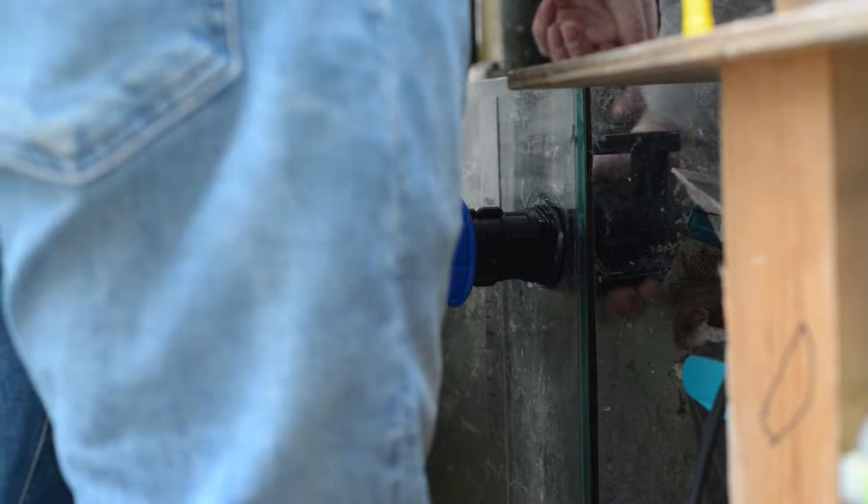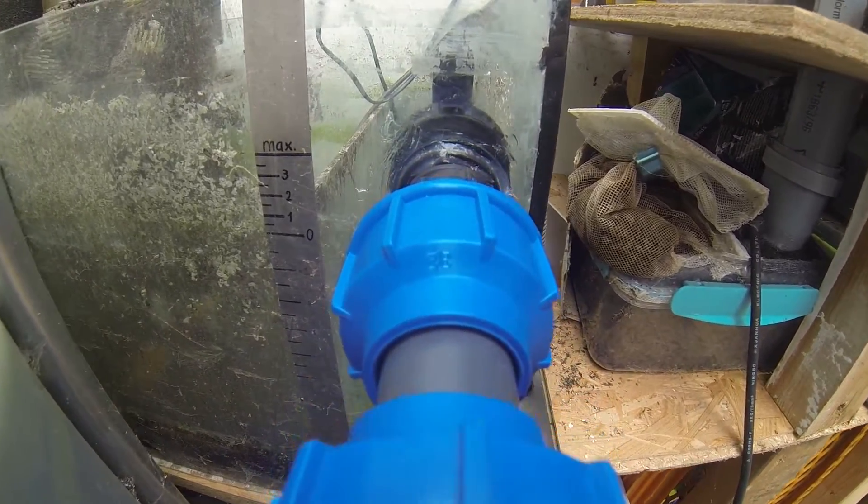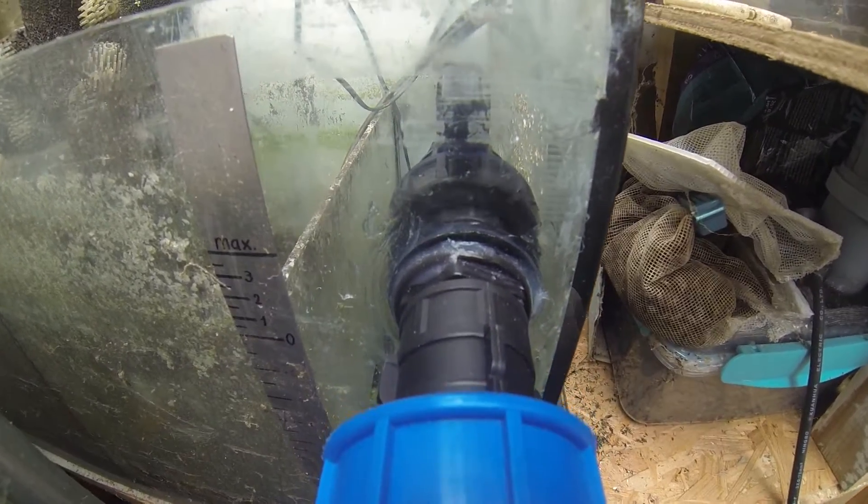I will just screw the fitting back on now with the silicone still flexible. It can then cure with the pipes assembled and the screwing motion will not be transferred onto the seal which might create a leak otherwise.